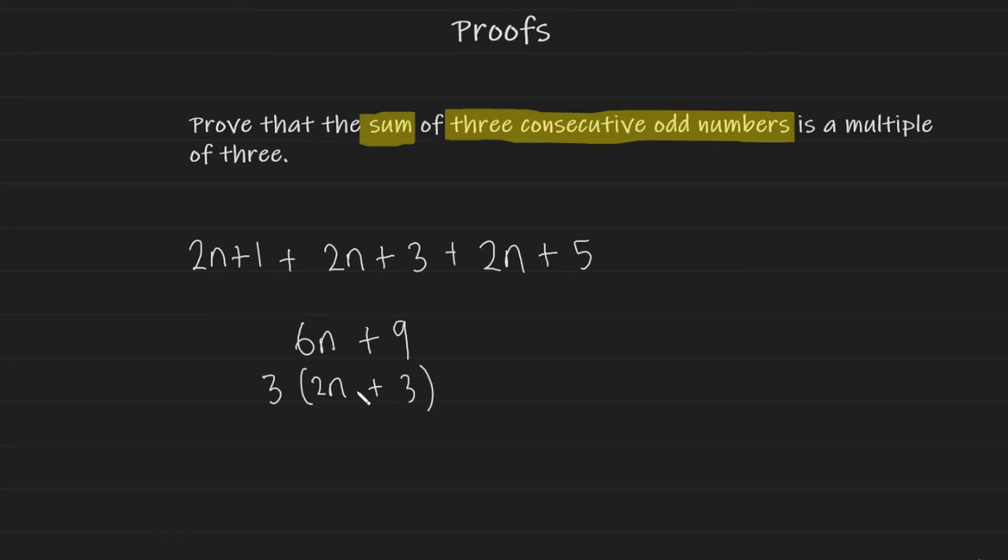So therefore, this expression here, or if you try and add three consecutive odd values together, will give you something that can be multiplied by 3. And there you have it. By writing the final line here, 3 times 2n plus 3, you have proven that the sum of three consecutive odd numbers is a multiple of 3.